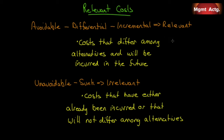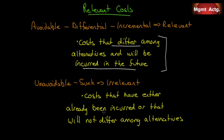This definition is smuggling in two things. Costs that differ among the alternatives and will be incurred in the future. Costs that differ but are incurred in the past — that's a sunk cost. Notice we have the words unavoidable, sunk, or irrelevant: costs that have either already been incurred or that will not differ among the alternatives. That's all that's new in Chapter 12. You're done — you can go right to the problems now.